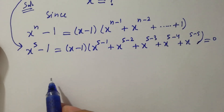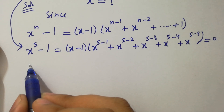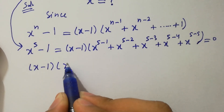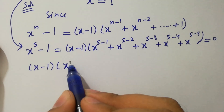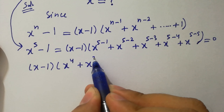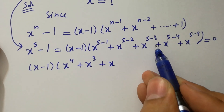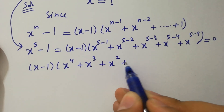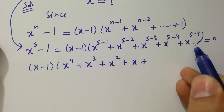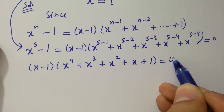Simplify this. We have x minus 1 times x to the power 5 minus 1 is 4, plus x to the power 5 minus 2 is 3, plus x to the power 5 minus 3 is 2, plus x to the power 5 minus 4 is 1, plus x to the power 5 minus 5 is 0, equals 0.